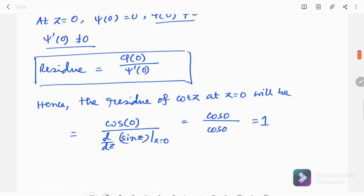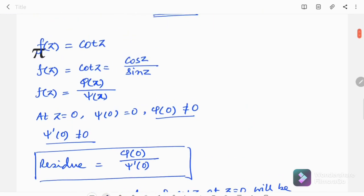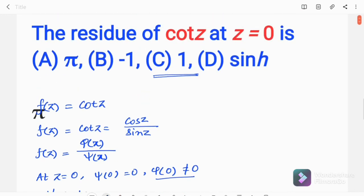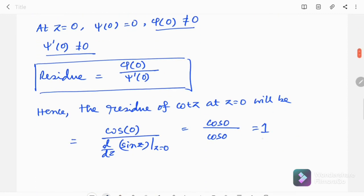At z equal to 0 the value of cot z is 1.